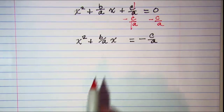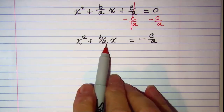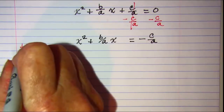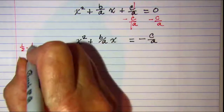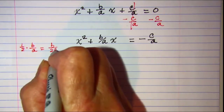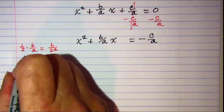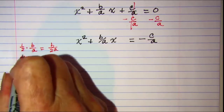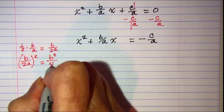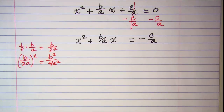The next step is what I call the half-it-squared-added step. I need to take the coefficient of x, which is b over a, and multiply it by one half to get b over 2a. Then that quantity squared is b squared over 4a squared, and I want to add that to both sides of the equation.